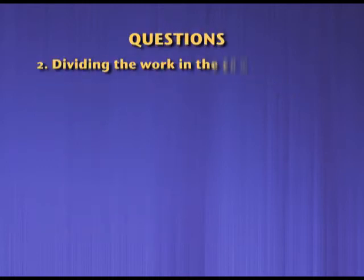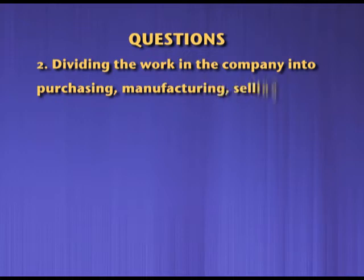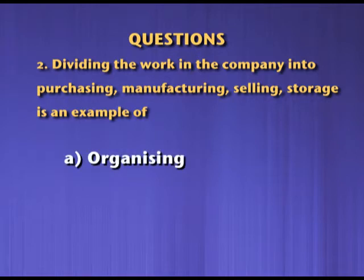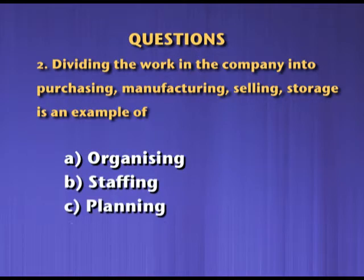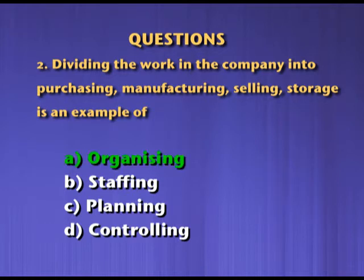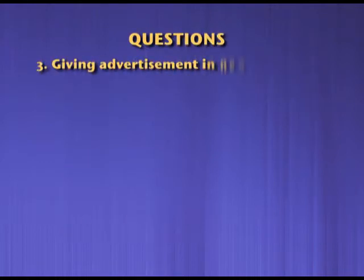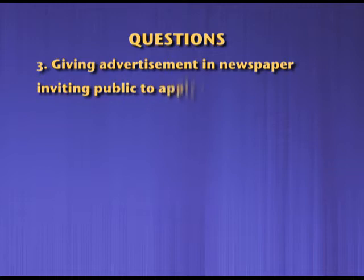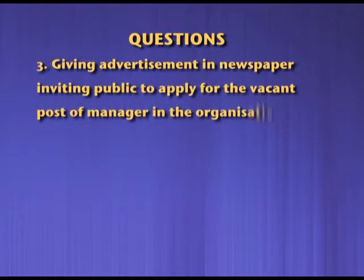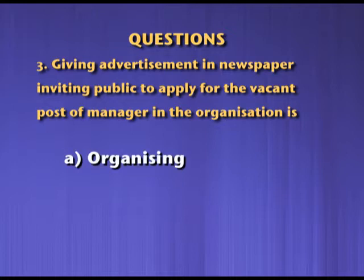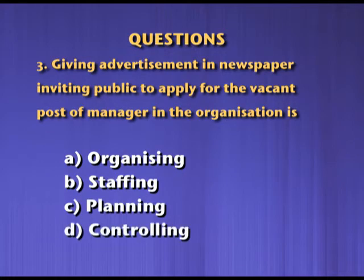Question number two: Dividing the work in the company into purchasing, manufacturing, selling, stores — is an example of organizing, staffing, planning, or controlling? Students, your correct answer is B. Staffing.